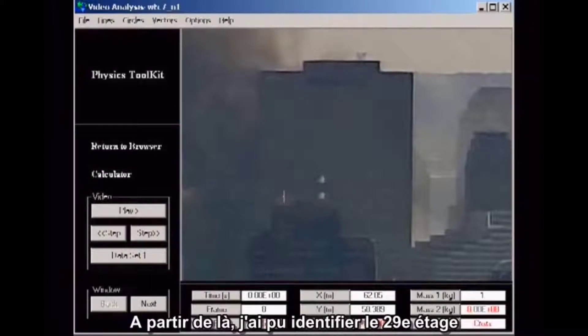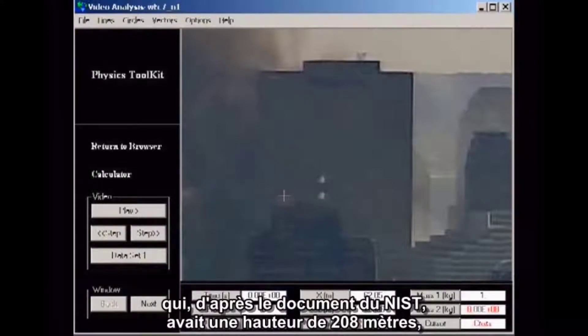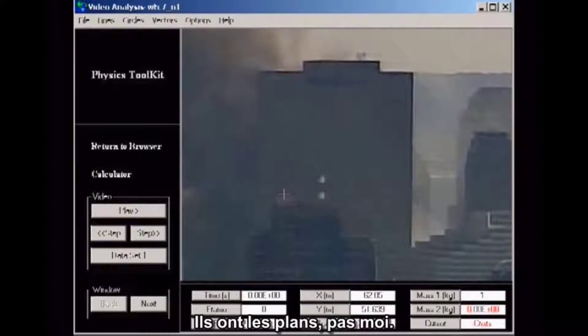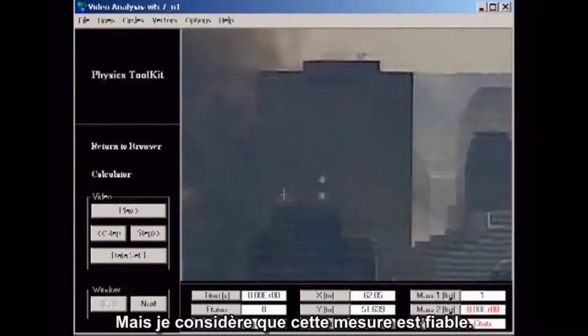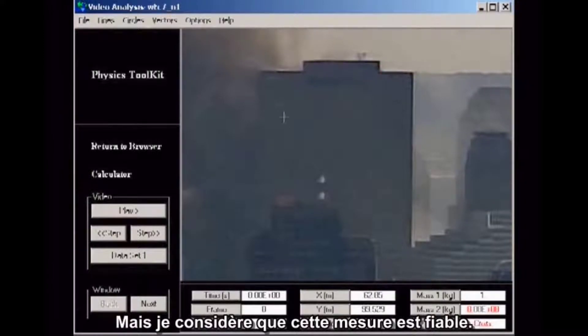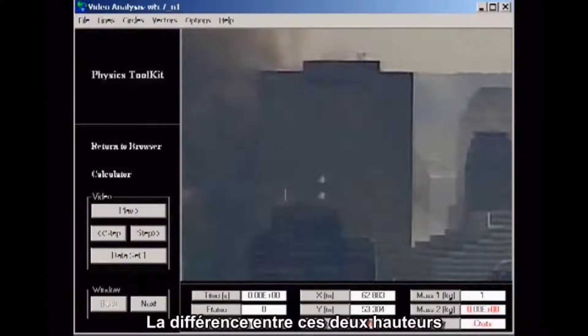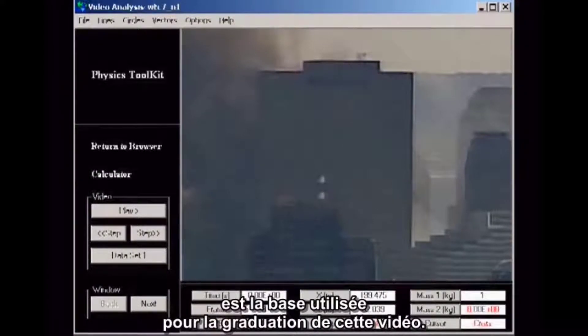From this, I was able to identify the 29th floor, which is listed in the NIST document as having a height of 683 feet 6 inches, measuring from some baseline which they don't specify. They have the blueprints, I don't, but I take this measurement to be reliable. The other measurement they give is the height of the roofline, which they state is 925 feet 4 inches above their baseline. The difference of these two heights converted to meters is the basis for the calibration of this video.